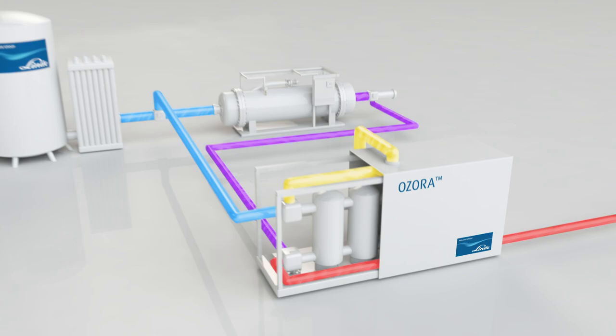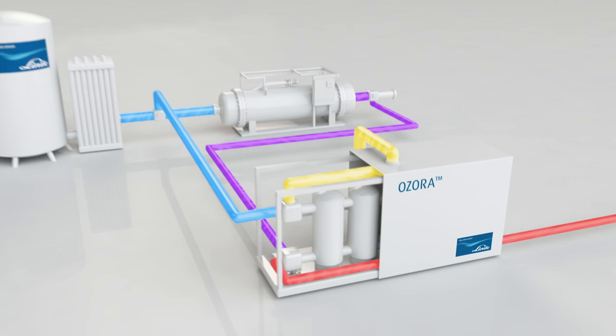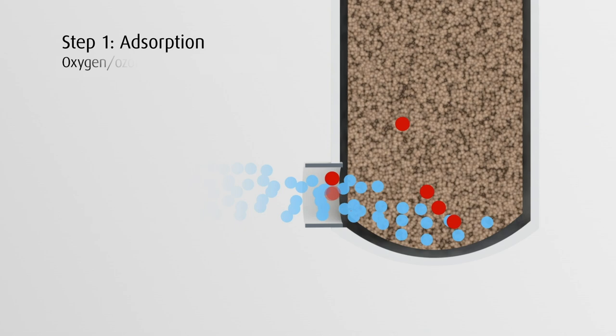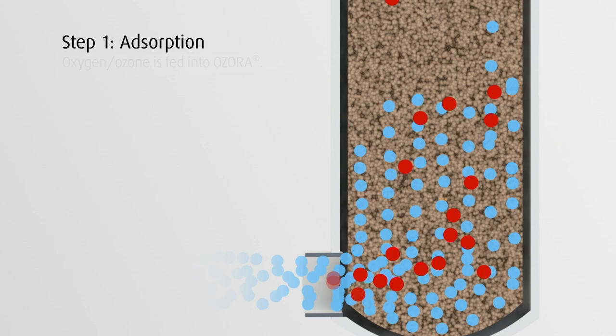Let's take a look at how Ozora separates oxygen from ozone. The process begins with the absorption step. The oxygen-ozone mixture from the ozone generator is fed into Ozora, where it flows through a sieve material, which selectively absorbs ozone.